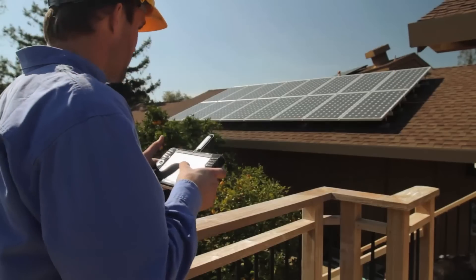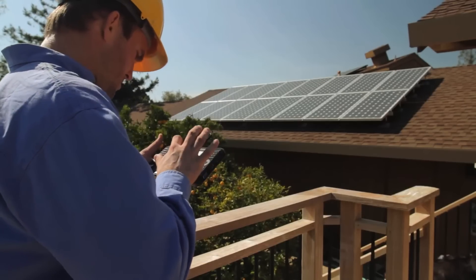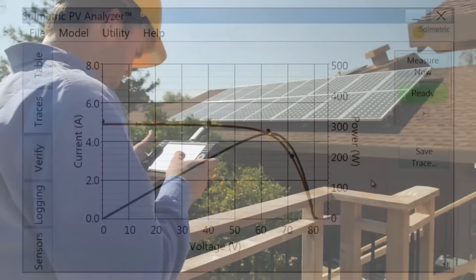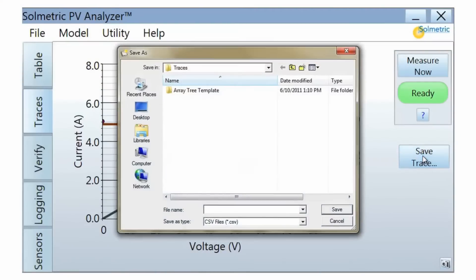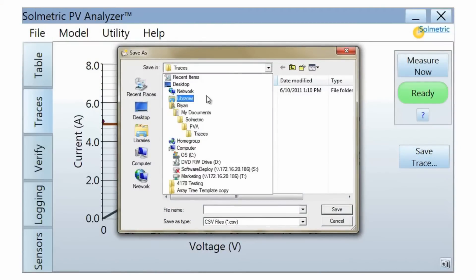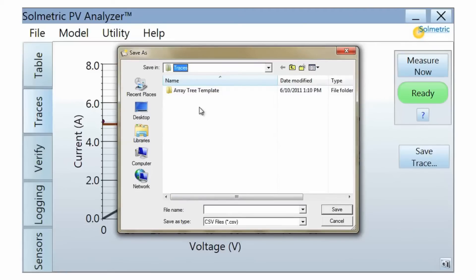When you test arrays, always save your data in an array tree. The array tree is a Windows directory tree that matches the architecture of the PV array. A template is provided in the Traces folder.